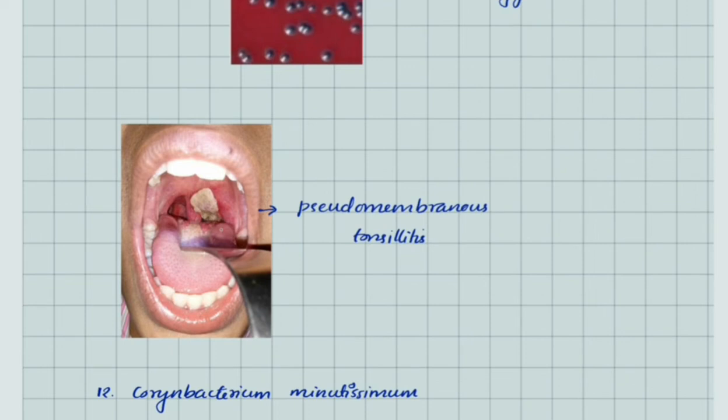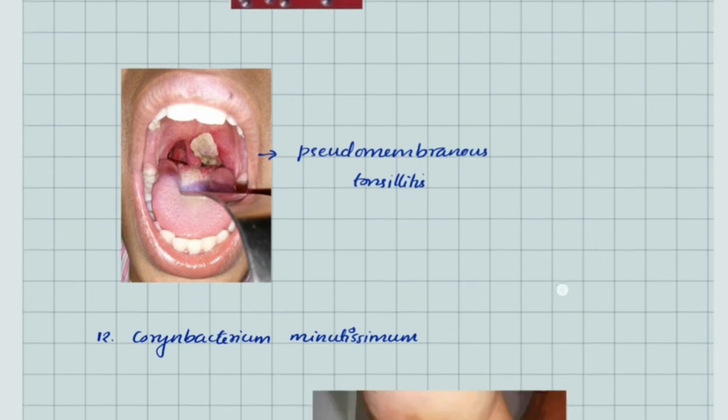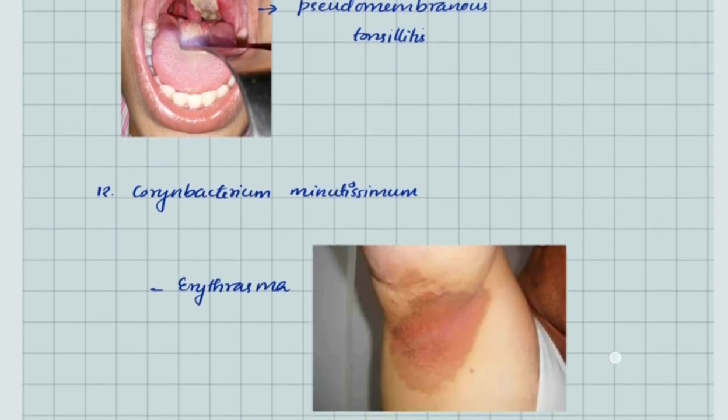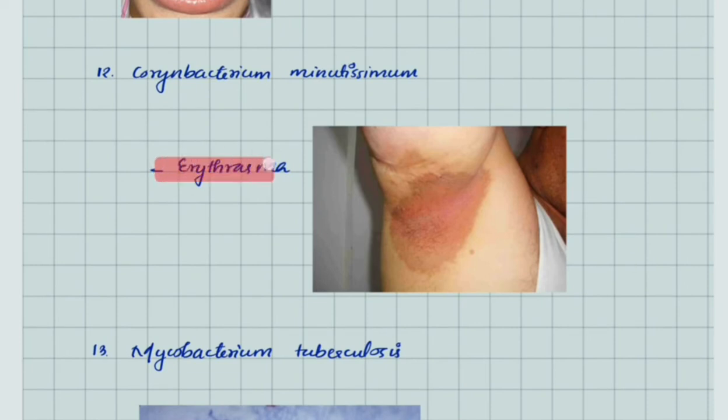This is the image of pseudomembrane in tonsil. Corynebacterium minutissimum causes erythrasma—this is the picture of erythrasma.